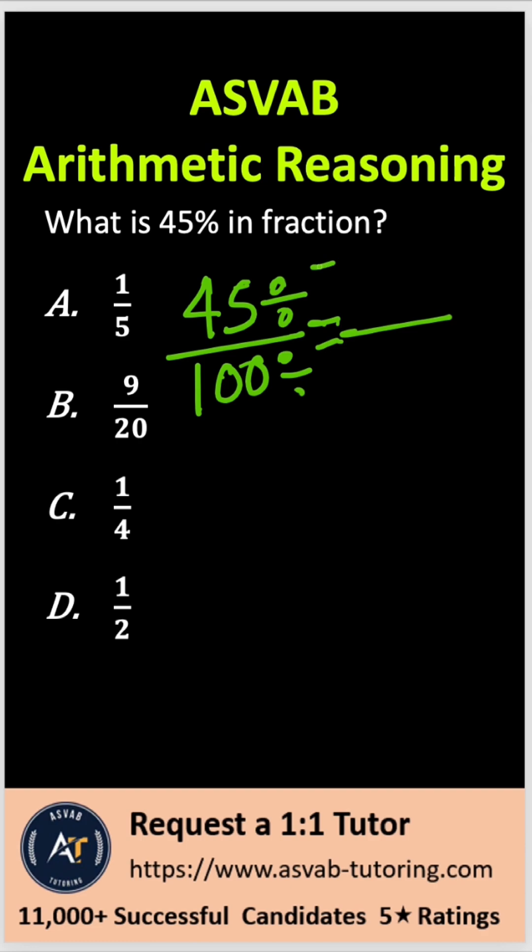45 divided by 5 is 9, 100 divided by 5 is 20. With that, the correct answer is option B, 9 over 20.